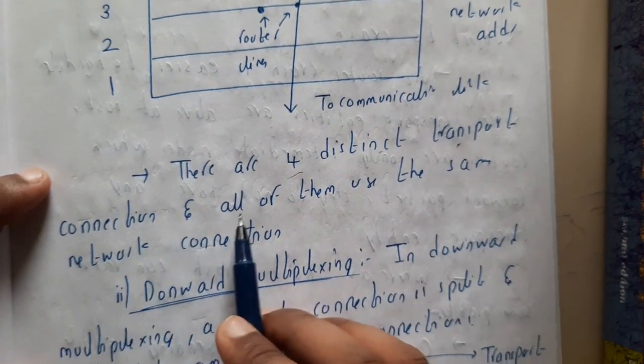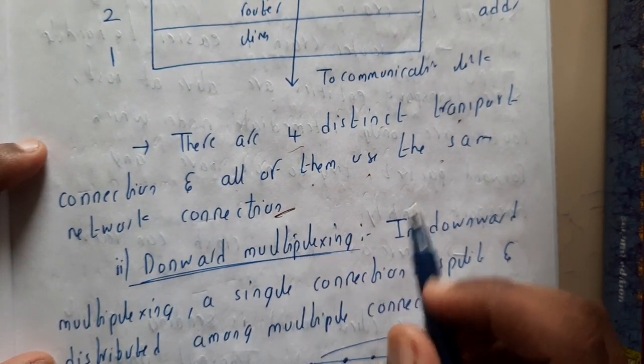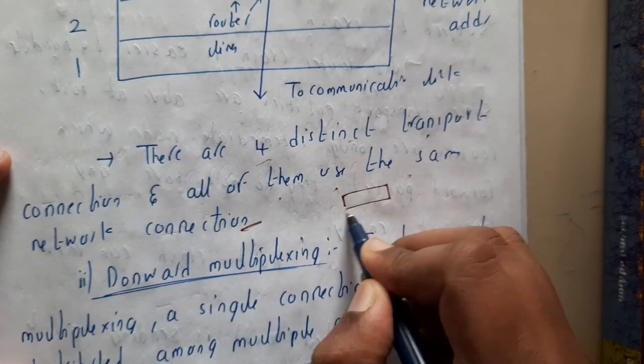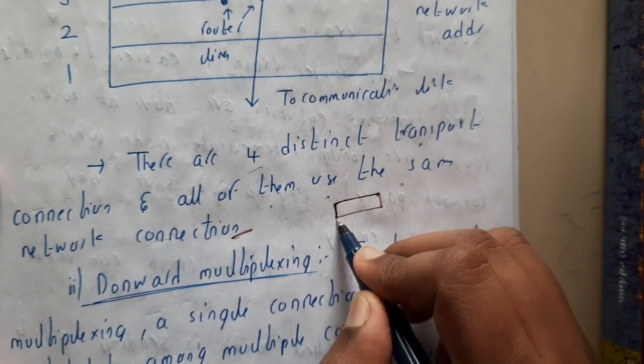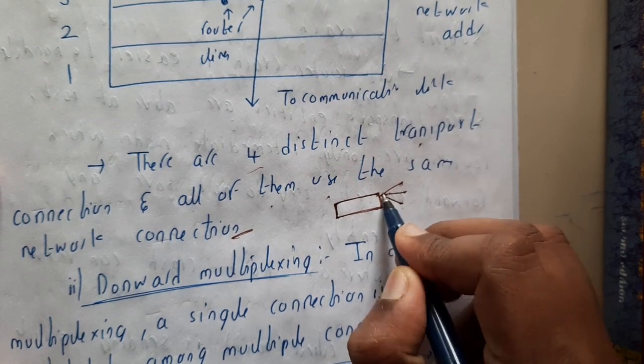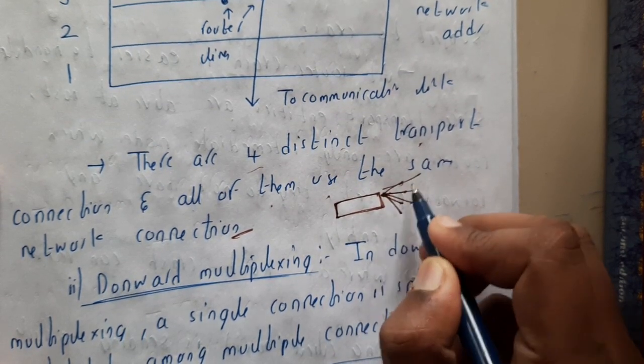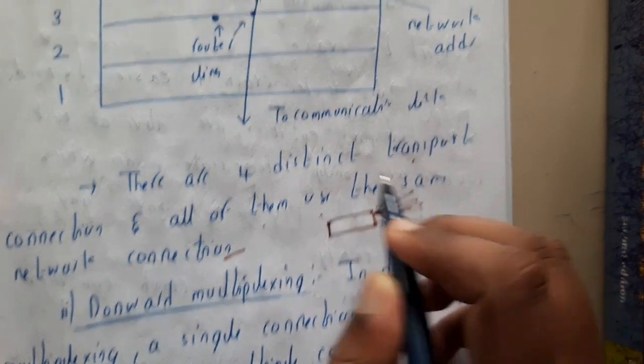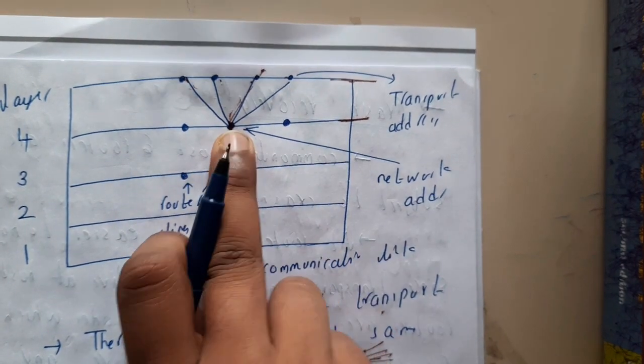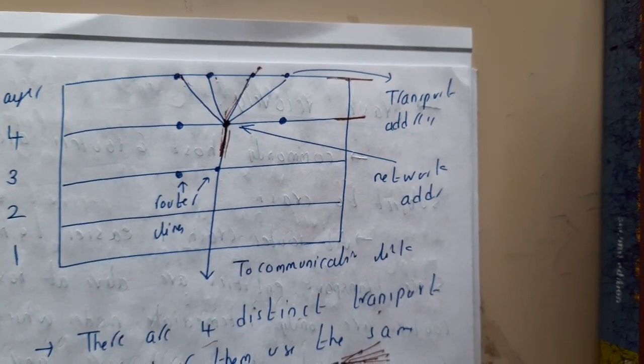There are four distinct transport connections and all of them use the same network connection. In a particular network or IP there could be multiple processes or applications running. Each and every application is represented as a dot here, and this is your computer or application.